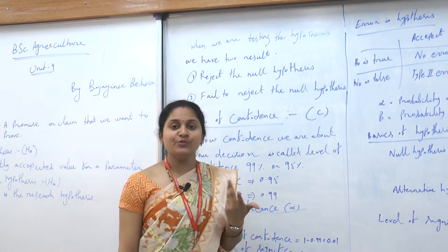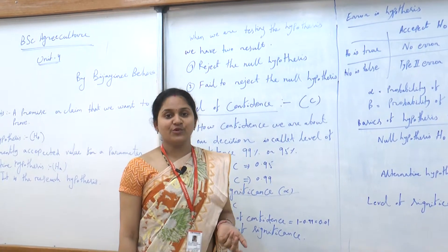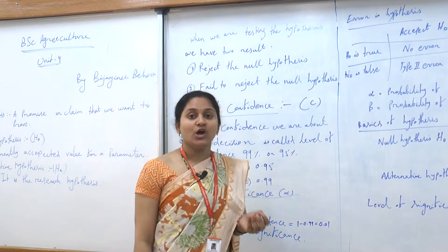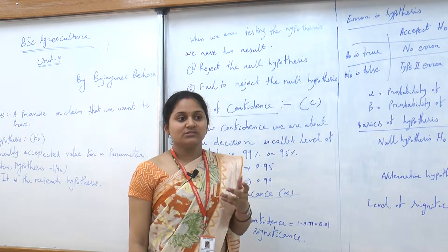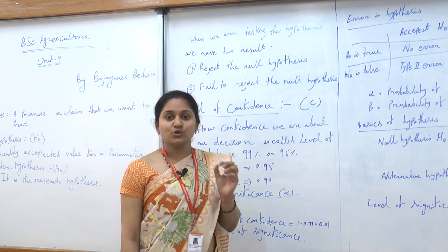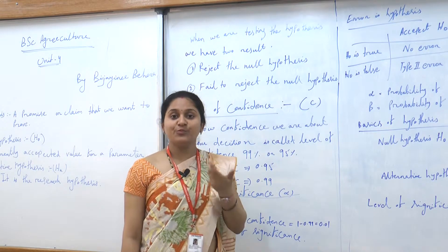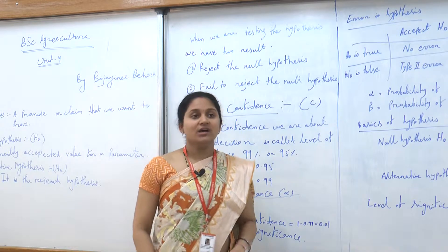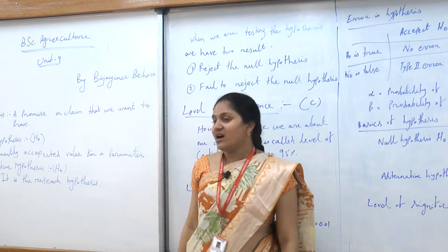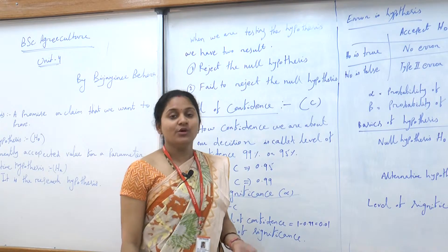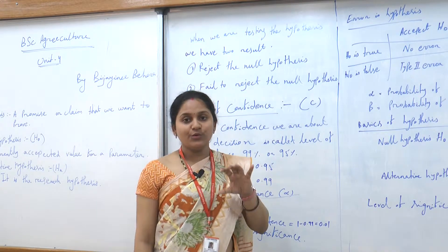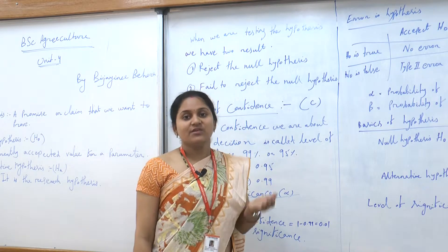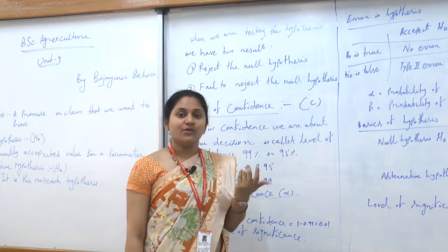If we want to prove something, we have to provide proof. In statistics, nothing can be accepted just hypothetically or as assumed. If we say something, it is not proved unless shown with proper evidence. So here, H0 and HA are treated as claims, and for any claim we have to show our result with evidence to prove it.